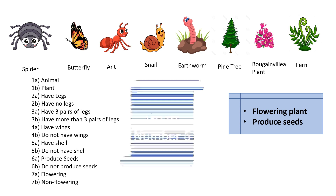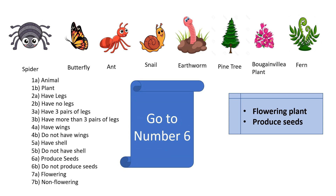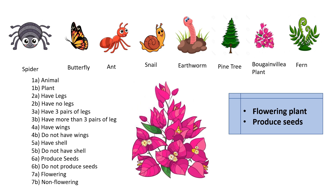Choosing 1B, the dichotomous key asks us to go to question number 6. We can skip questions 2, 3, 4, and 5 and go directly to question 6. Question 6 asks whether the organism produces seeds or does not produce seeds. We know it produces seeds, so we choose answer 6A. The dichotomous key then asks us to go to question 7. Question 7 asks whether it is a flowering or non-flowering plant — we know it is a flowering plant, so we choose answer 7A. Our dichotomous key is now complete and we have our answer.